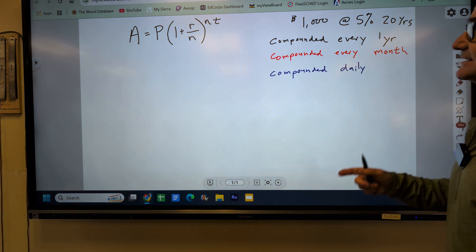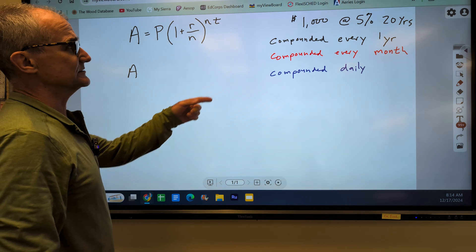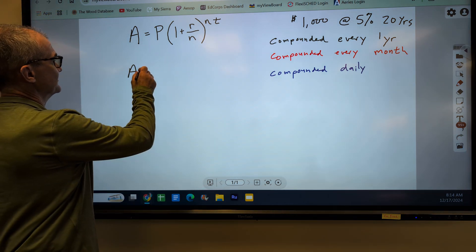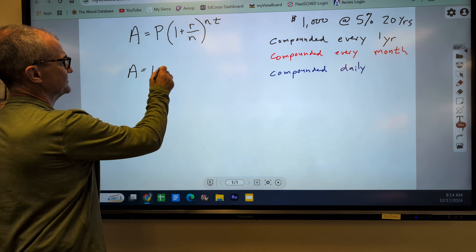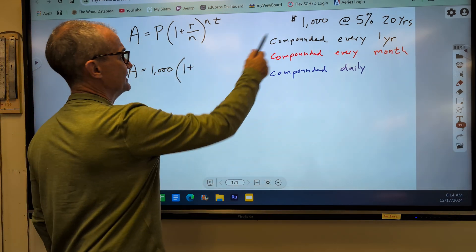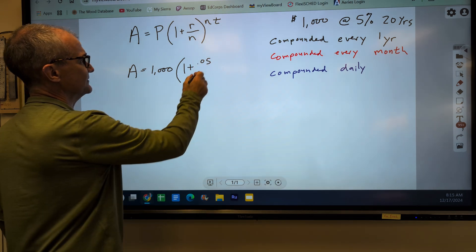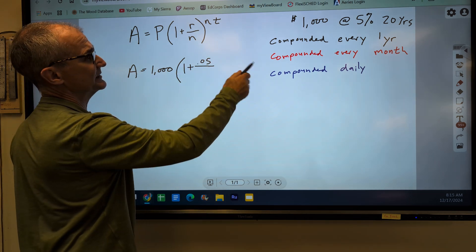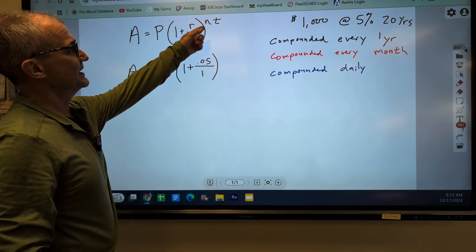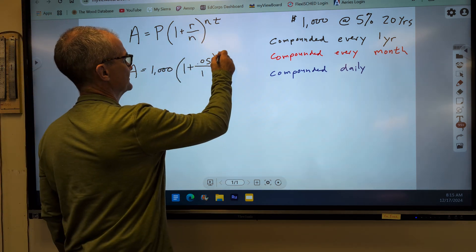So let's take a look at this right here. How much money am I going to have after 20 years with $1,000 in the bank at 5% interest? So my principal is what I'm starting with, 1,000, times the quantity 1 plus that rate, 5% converted to a decimal, .05. I am compounding every year, so the 1 goes there. And then this is every year, so 1 times t over the 20 years.